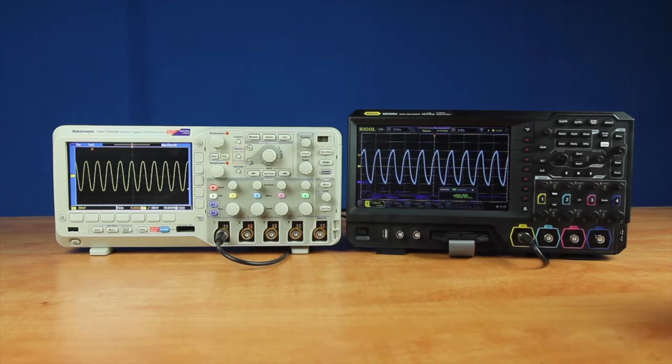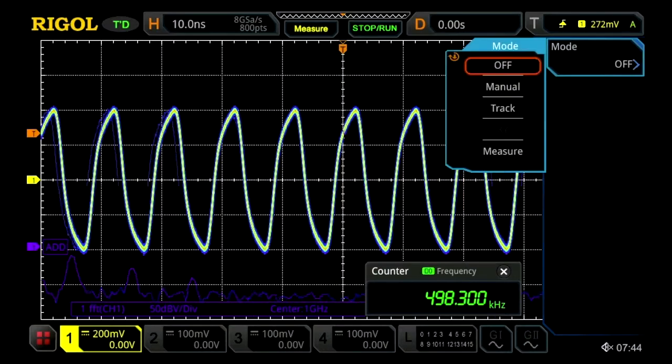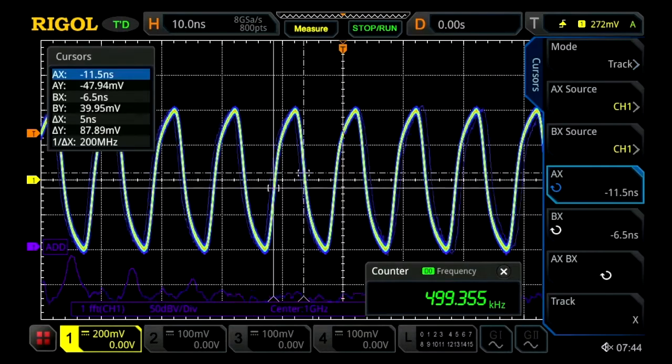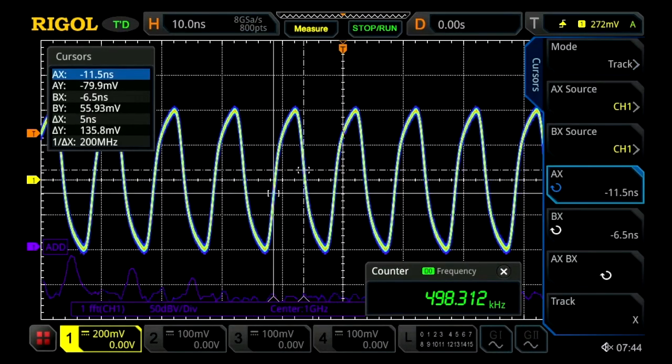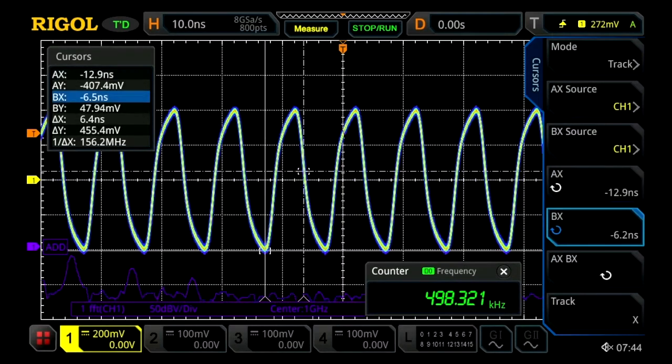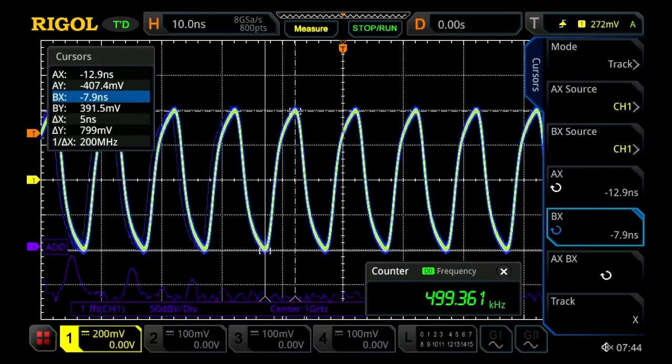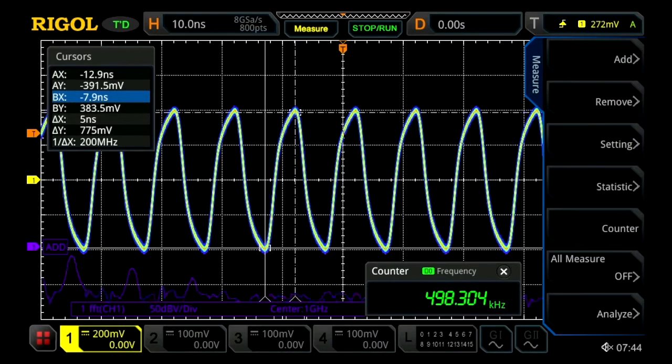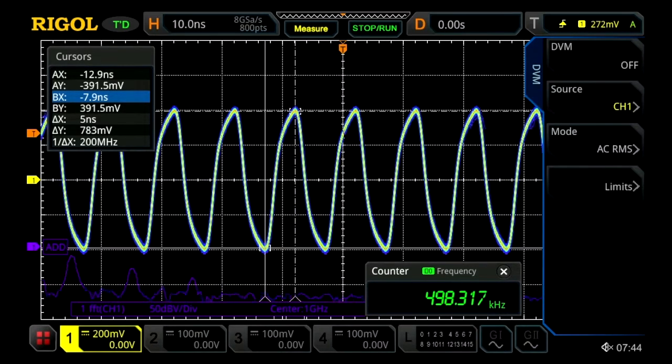Now we can add some other functions as well. We can turn the cursor on, track a couple of those waves. We can go ahead and turn on some analysis functions like our digital voltmeter.